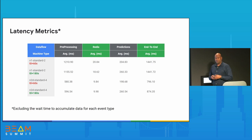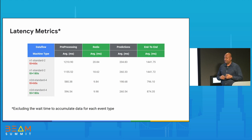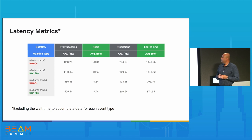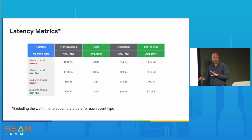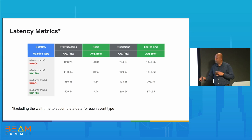Our original assumption was that external dependencies would add latency, but adding Redis gave us only about a 1% penalty in overall end-to-end latency — less than 10 milliseconds even on the larger instances. Redis itself accounted for only about 10 milliseconds. All the number crunching to create payloads, send out for prediction, get the result back, and send it out could be done within about one second. We hit roughly 900 milliseconds end-to-end latency, which was very much acceptable for this use case.